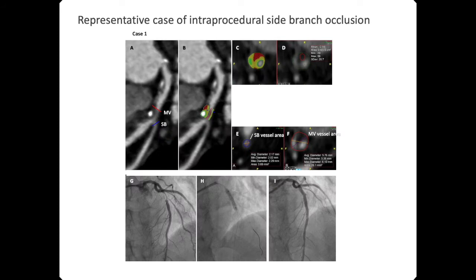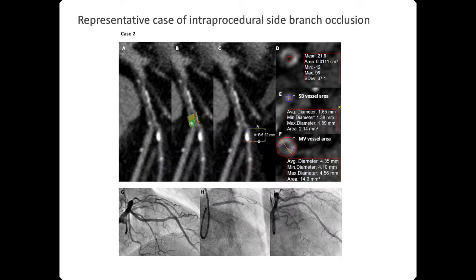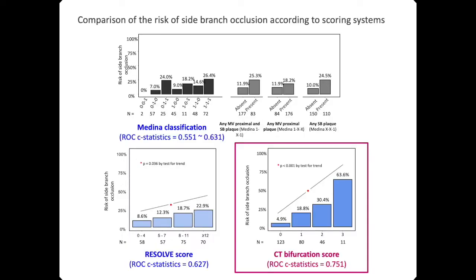Here is a case of intra-procedural side-branch occlusion. In this LAD-diagonal bifurcation region, there is a large amount of low-density plaque and several calcification spots in the LAD and diagonal bifurcation region. In this case, we lost the side branch. The performance of the C-divification score for predicting side-branch occlusion was much higher.